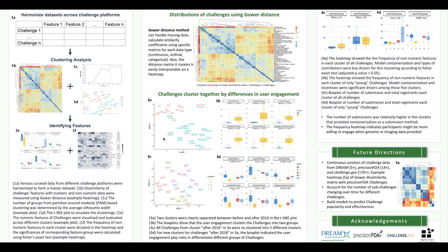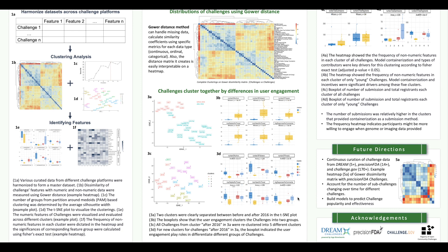So we also tried to use only the challenges belonging to cluster number 2 from figure 3a and re-cluster into five new groups. The results show a better mix of years in figure 3c, but challenges with similar years still tend to group together. And from the box plot result in figure 3d, we still can see differences in user engagement data even when using only the younger challenges after 2016. Therefore, it seems that user engagement data plays a key role in differentiating the challenges.